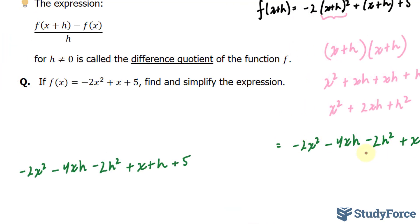I've copied and pasted what I just found right here, and we have minus f at x. This means that each of these terms will be multiplied by negative. Therefore, this will become plus 2x squared. This will become minus x, and this becomes minus 5.